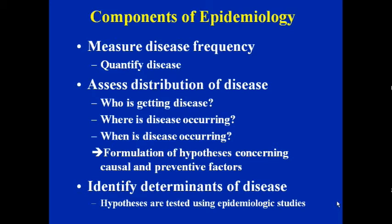It is worthwhile to review the components of epidemiology. The first is to measure disease frequency — that is, to quantify the disease in terms of rates and ratios, such as prevalence rate, incidence rate, mortality rates, and fertility rates. Measuring disease frequency is the first and most important component of epidemiology.